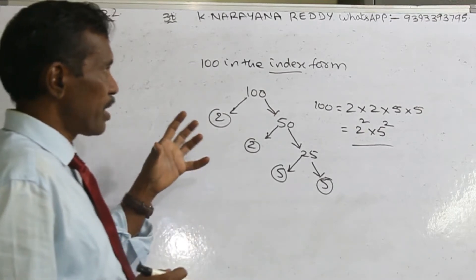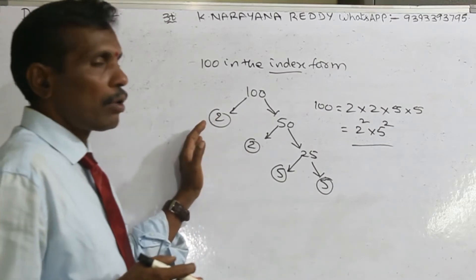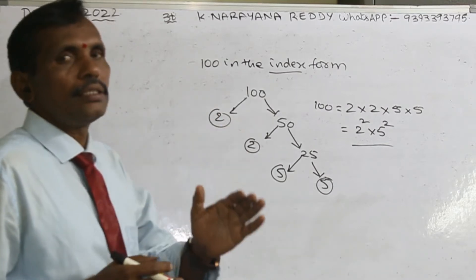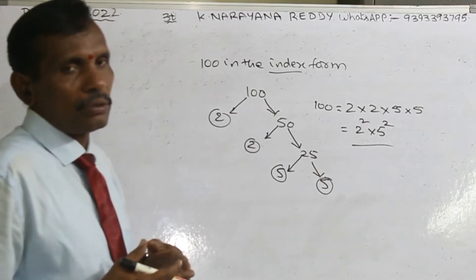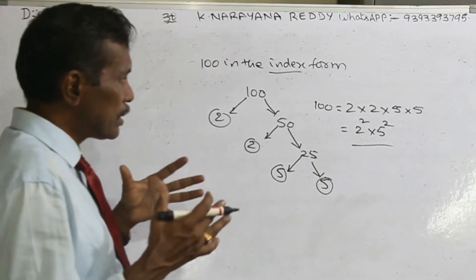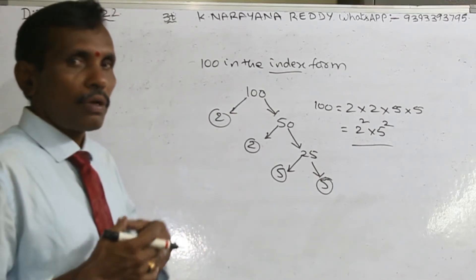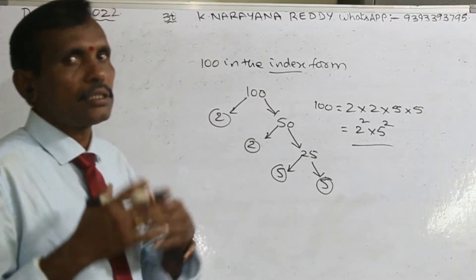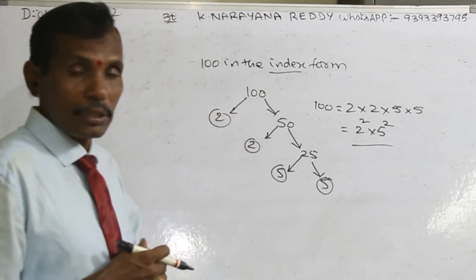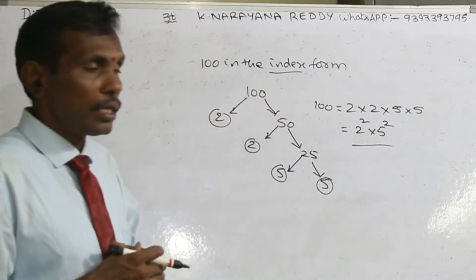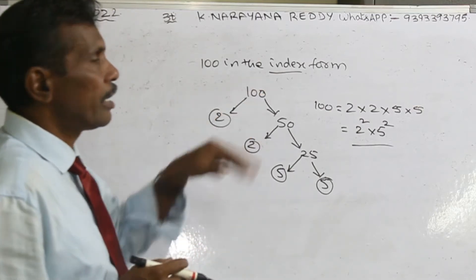You can do the calculation in different methods — in the index form as well as in the division form. Both are the same. But what is the simplest method? The method from which you can save the most time — that is the method you want to select. This is a simple example of the index form.